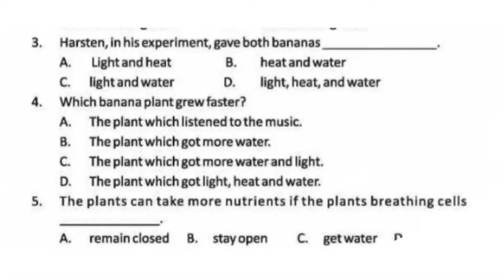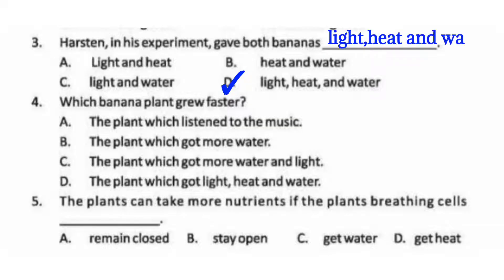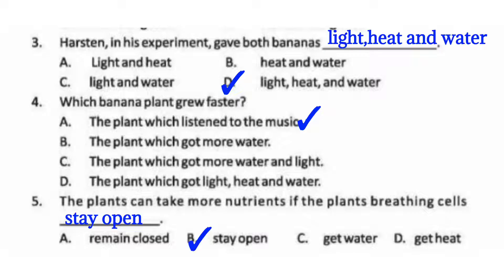Question 3: Hurston, in his experiment, gave both banana plants light, heat and water. Question 4: Which banana plant grew faster? Answer: the plant that listened to the music. Question 5: The plants can take more nutrients if the plant's breathing cells stay open. Option B.